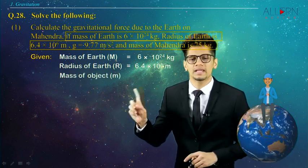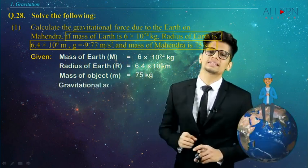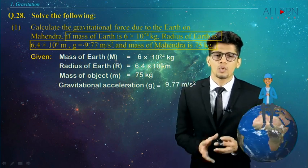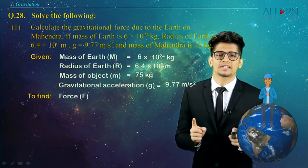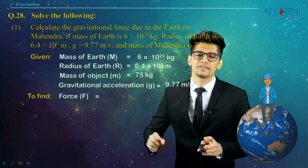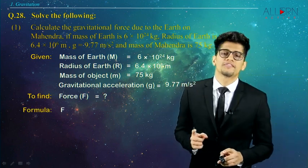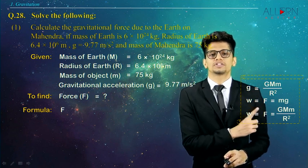The mass of the object, small m, that is Mahindra, is 75 kg, and the value of small g is 9.77 m/s². What do we need to find? We need to calculate the gravitational force. So gravitational force, denoted by capital F, is what we need to find. Which formula do we use? The formula is F = GMm/R².